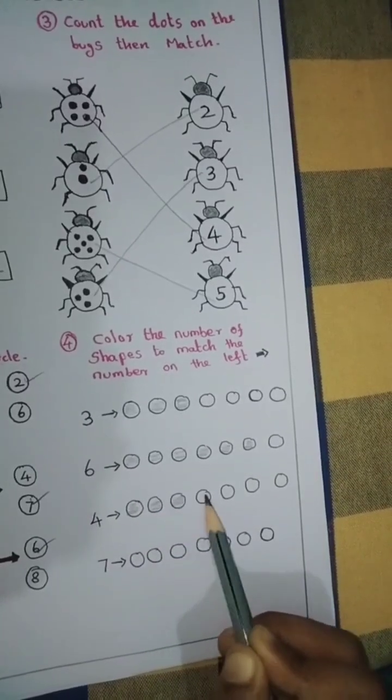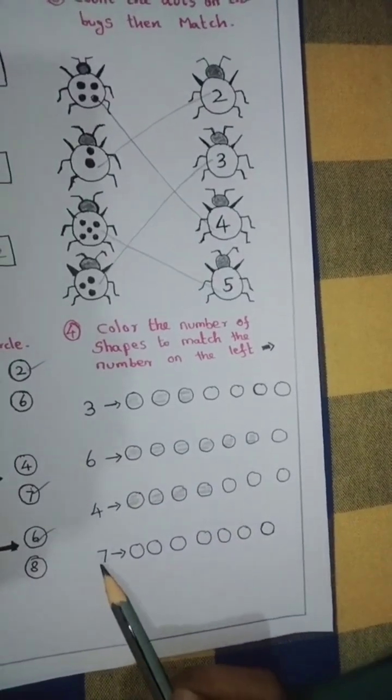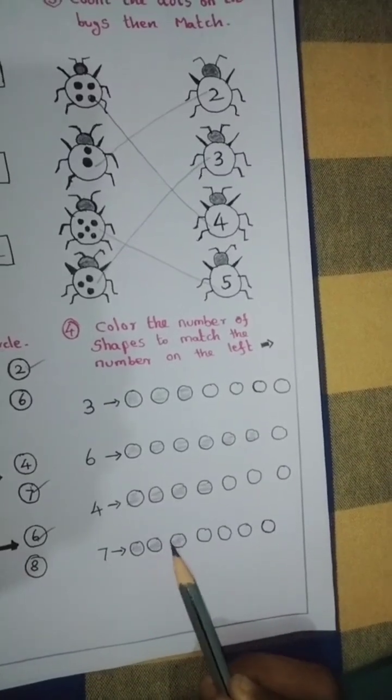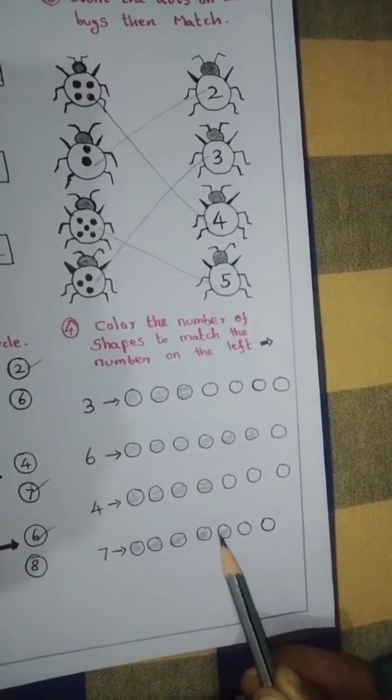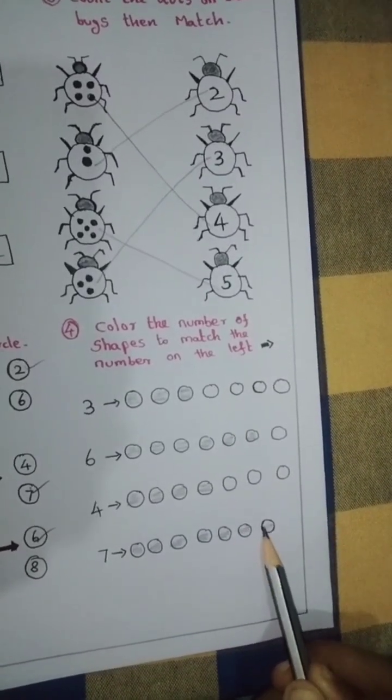Last one is 7. 1, 2, 3, 4, 5, 6, 7. Finish.